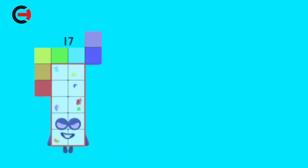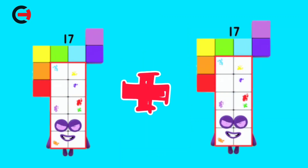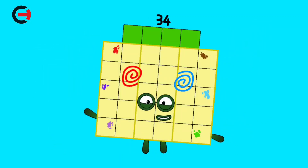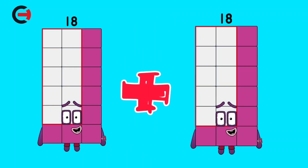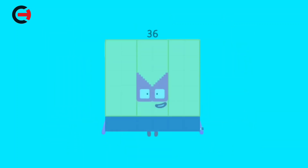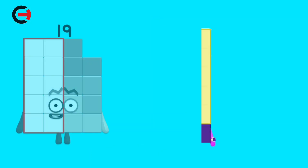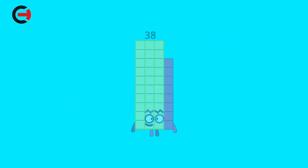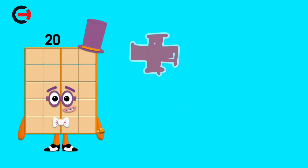17 plus 17 is equal 34. 18 plus 18 is equal 36. 19 plus 19 is equal 38. 20 plus 20 is equal 40.